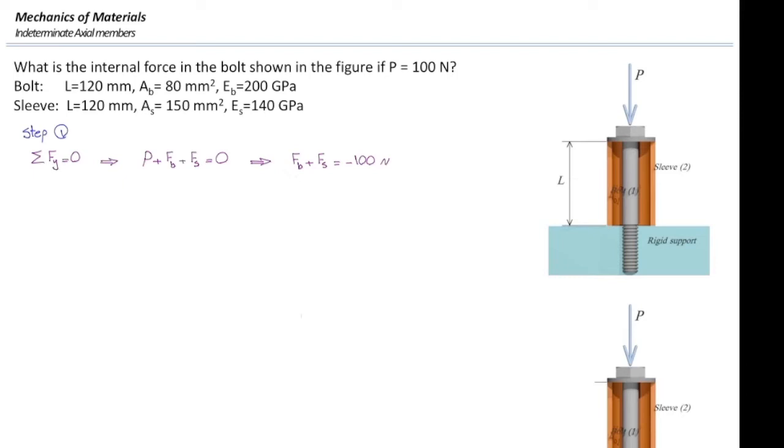Let's determine the deformation in each of these two elements, in sleeve and in the bar. Deformation, as we discussed before, would be FL over EA. F is unknown, but the rest of those parameters are given. Length of the bolt is 120 mm. Modulus of elasticity is 200 GPa. We need to convert that into MPa. And area is 80 mm². With that, it simplifies to FB over 133,333. So, we have determined the deformation in terms of force.